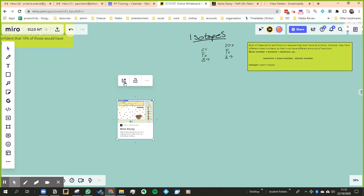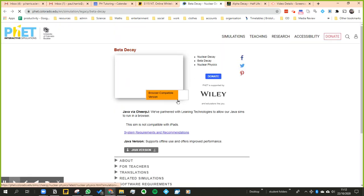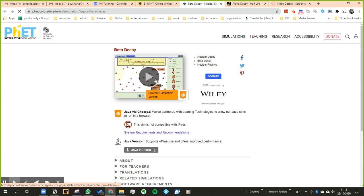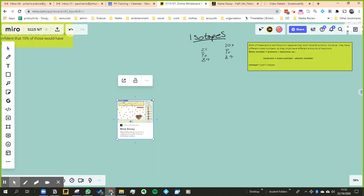We're looking at beta decay now. You can expand it out and click on play. My computer needs to have an update, so I have to go to the Java version. I've already got the Java version downloaded, so I'll just get that open.